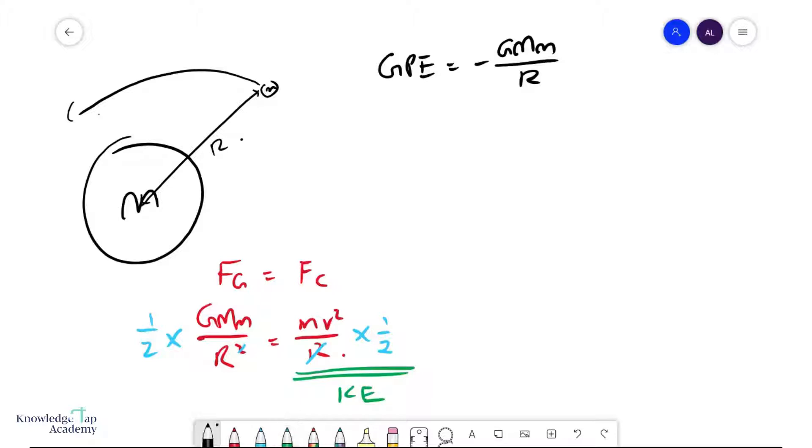And so for an orbiting object, its kinetic energy is actually just GMm over 2r, and the total energy of the object is the sum of these two expressions. And so that gives me minus GMm over 2r. Very nice results over here. So we can use this whenever an object is in orbit.